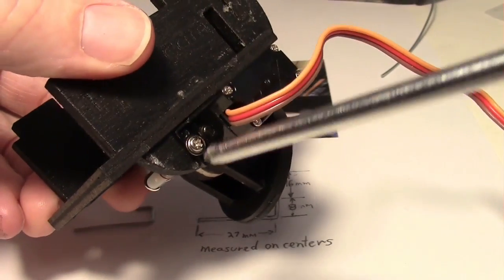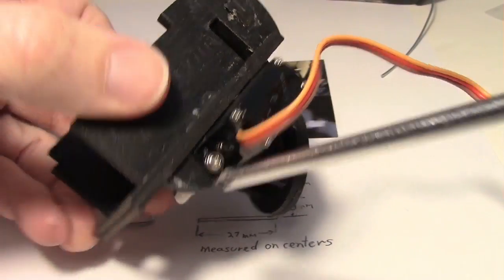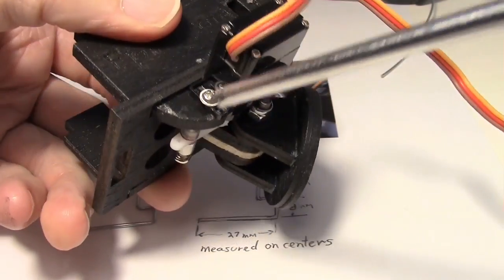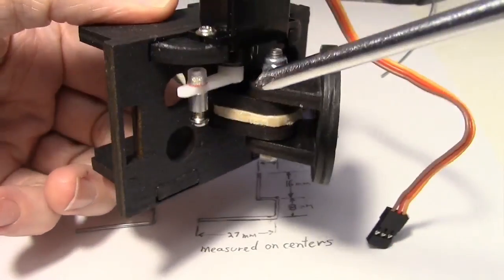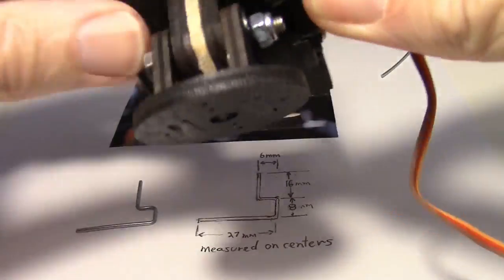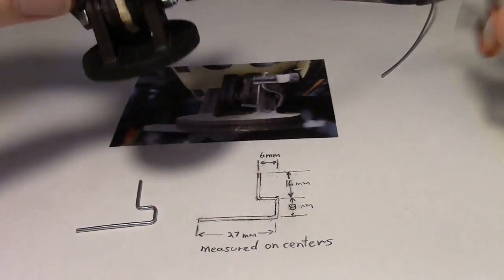So I now mounted the servo on here with some servo screws. One on each side. Holes were pre-drilled in the kit. So I didn't have to drill any holes. And you can see my servo arm right there. So next thing is the wire that I was talking about.